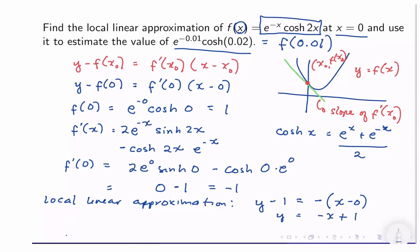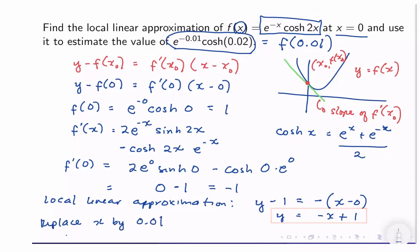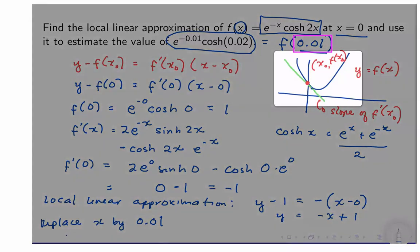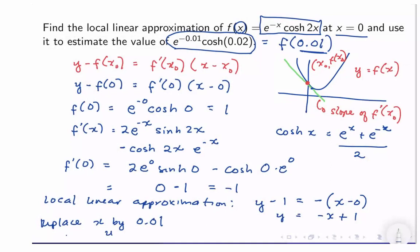Our local linear approximation is y minus 1 equals negative 1 times (x minus 0), giving y equals negative x plus 1. To approximate f(0.01), we replace x by 0.01: y equals negative 0.01 plus 1, which equals 0.99.